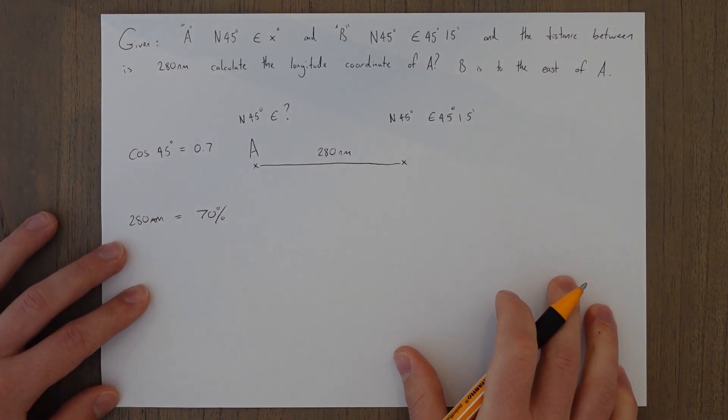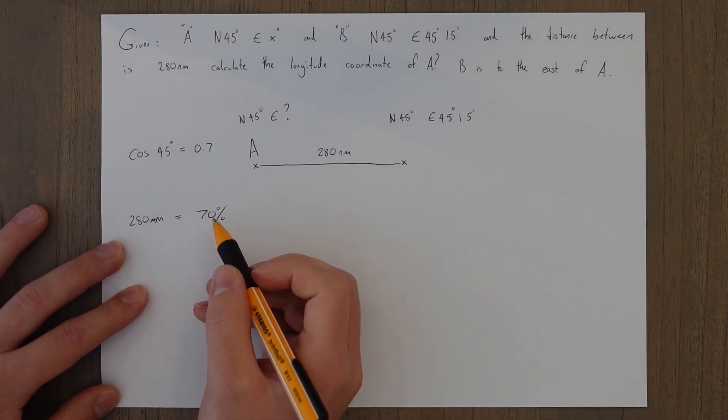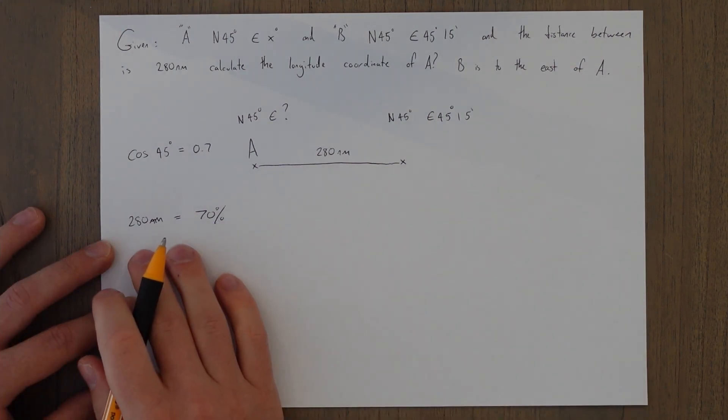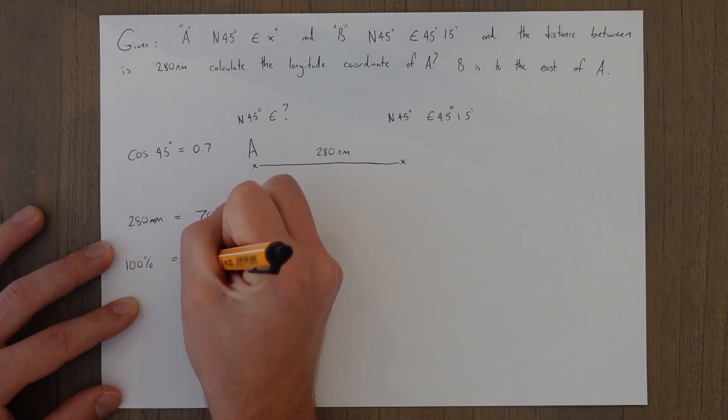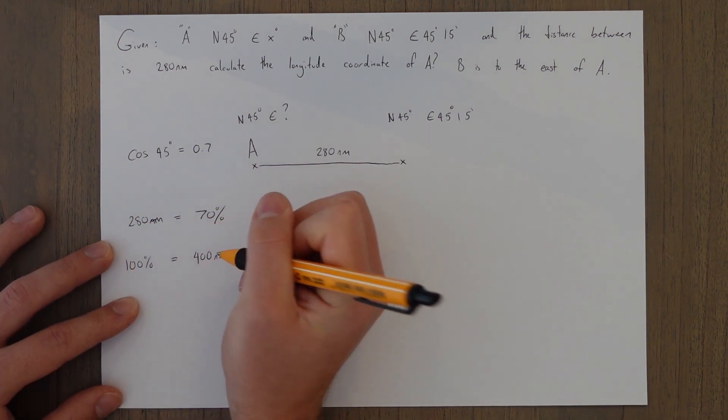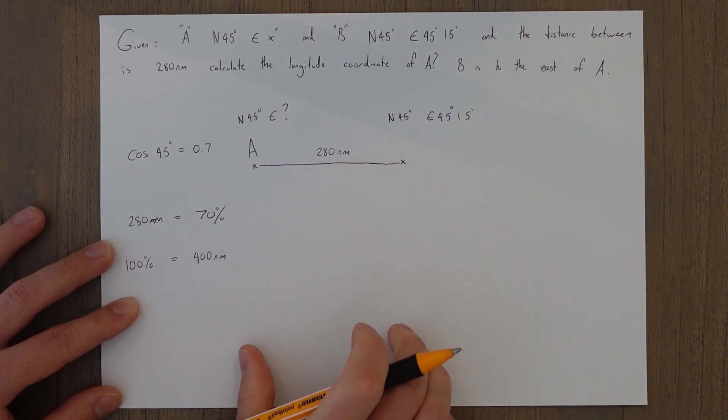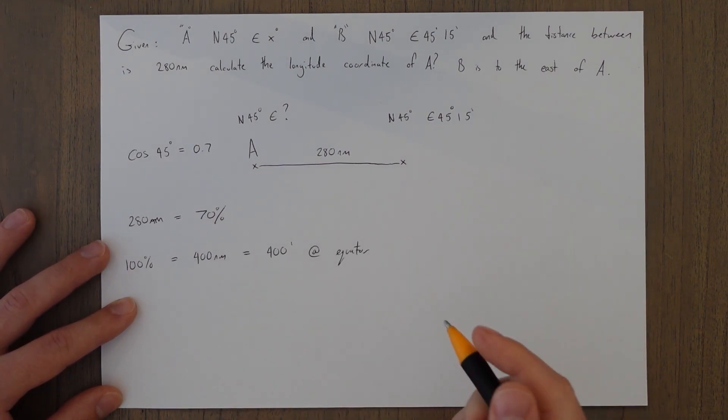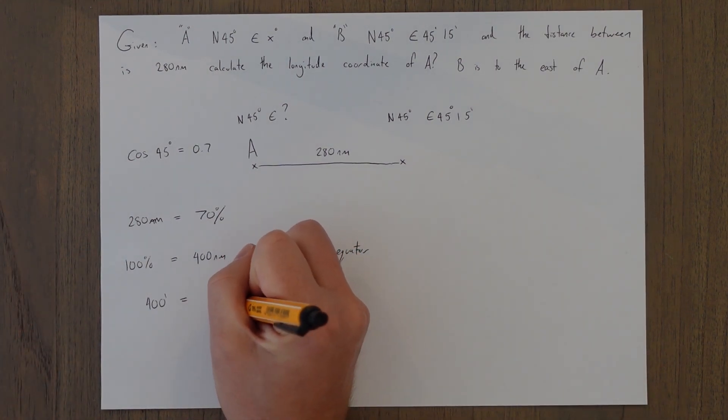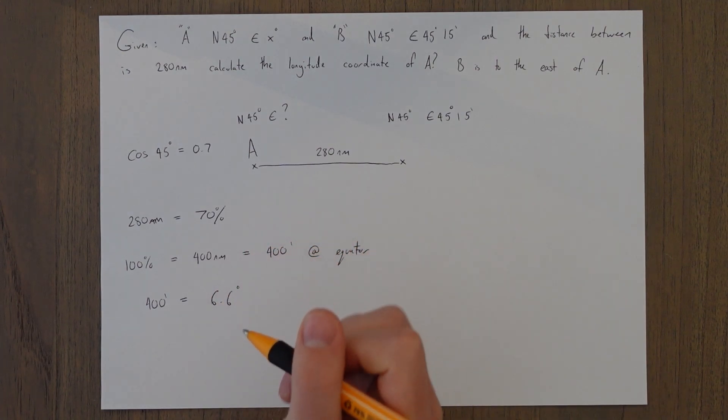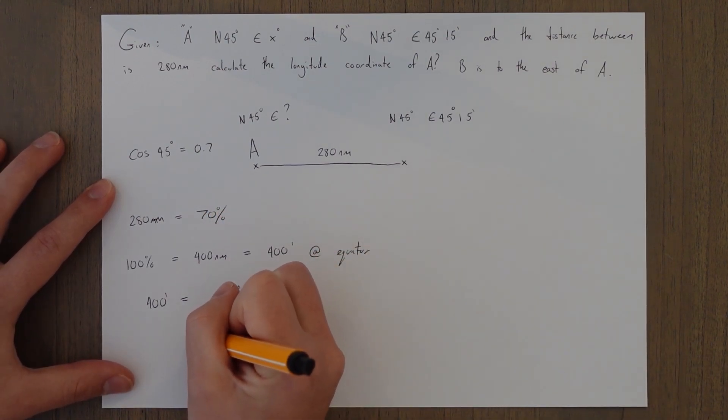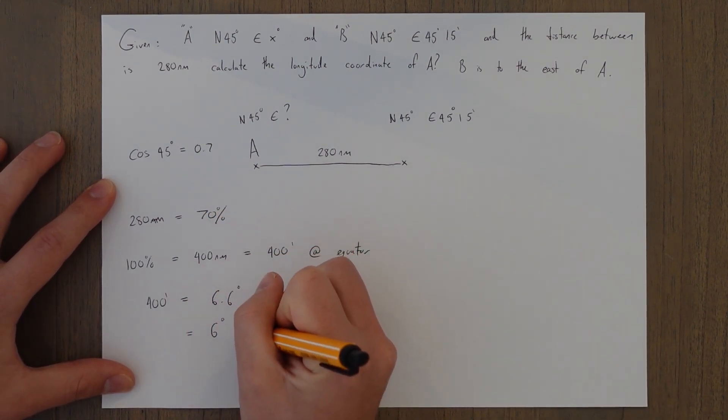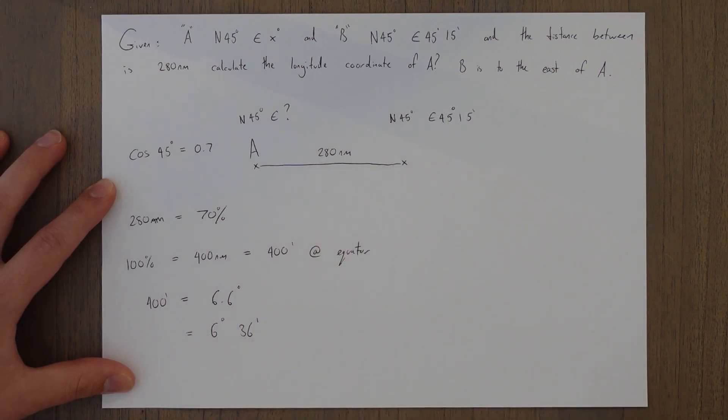All right, so that's the starting point. What we can then do is find out 100% change of distance. So using a calculator, you can then find out that 100% would be 400 nautical miles. Or at the equator, it would be a 400 minute change of longitude. We're getting somewhere now. 400 minutes is equal to 6.6 degrees. You just divide the 400 by 60. Or we could say that it is 6 degrees and 36 minutes of longitude.